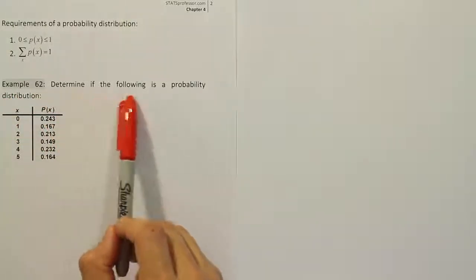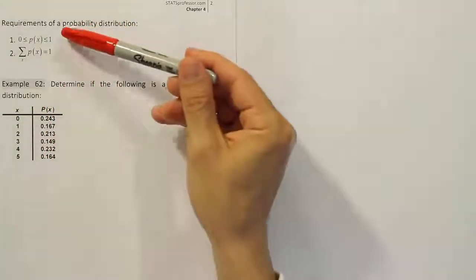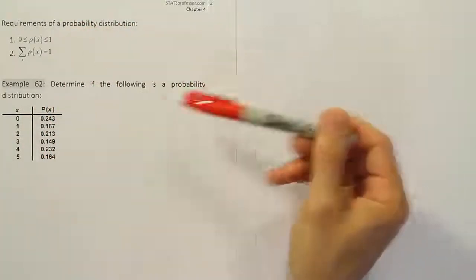Example 62. Determine if the following is a probability distribution. So we have to check these two conditions when they ask us to check if something is a probability distribution.